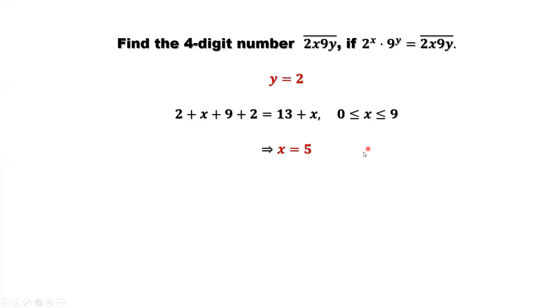We find the two numbers, x and y. Replace x and y from this four-digit number. 2x9y equals 2592. This is the answer.